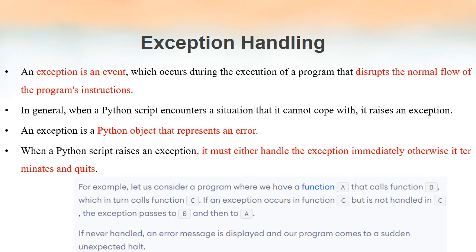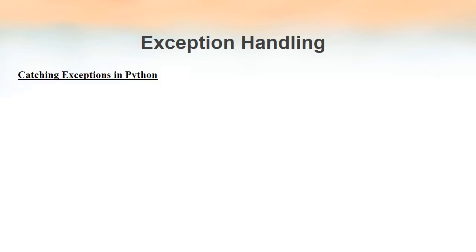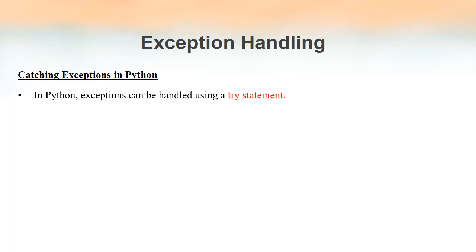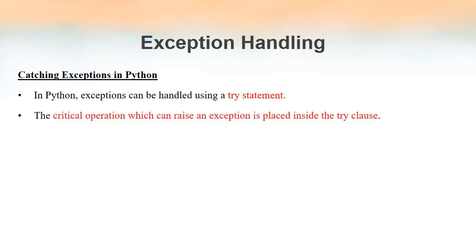An exception can be defined as a Python object that represents an error, or more generally as an event which occurs during the execution of a program which disrupts the normal flow of the program's execution. Once an exception is raised we must handle it. For catching exceptions in Python we can make use of the try block or try clause. All the statements that may raise an exception will be written inside a try clause.